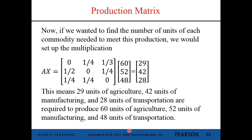If we wanted to find the number of units of each commodity needed to meet this production, we use matrix multiplication: A times X. Taking the input-output matrix times the production matrix gives us a result showing that 29 units of agriculture, 42 units of manufacturing, and 28 units of transportation are needed in order to produce 60 units of agriculture, 52 units of manufacturing, and 48 units of transportation in the economy.